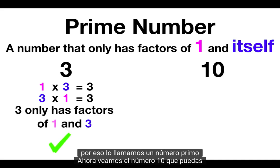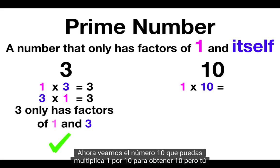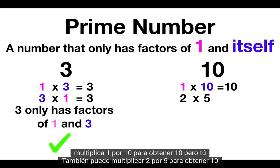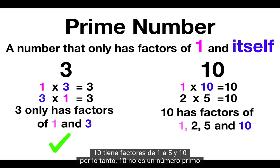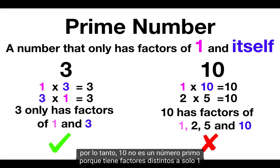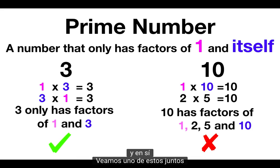Now let's look at number 10. You can multiply 1 times 10 to get 10, but you can also multiply 2 times 5 to get 10. So 10 has factors of 1, 2, 5, and 10. Therefore 10 is not a prime number because it has factors other than just 1 and itself.